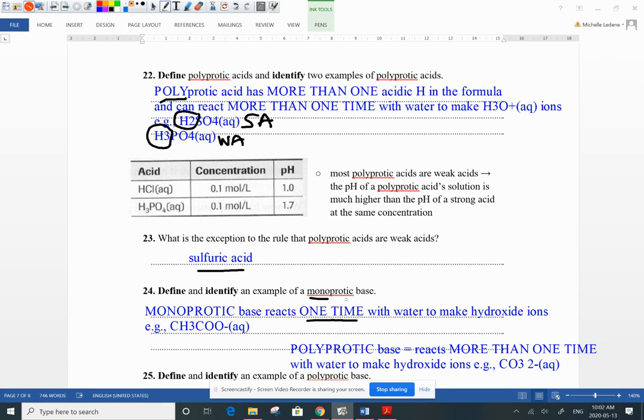So a lot of times when you have an acid and it reacts and the hydrogen combines with water to form hydronium, the anion that's left over would be considered then a base. So here's an example of an anion, the acetate anion reacts one time with water to make hydronium.